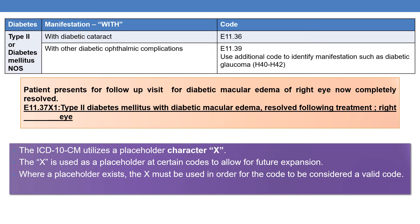Coming to DM with diabetic cataract — E11.36 is the final code for diabetes mellitus with cataract. Whenever a patient presents for diabetic cataract, you can directly code E11.36. For DM with other diabetic ophthalmic complications — whenever there are ophthalmic complications other than those specified — you need to code E11.39.